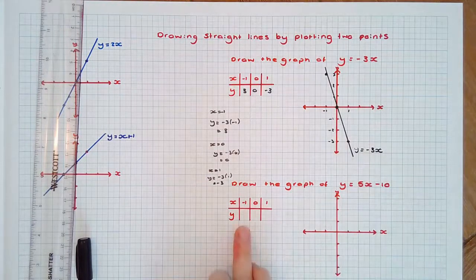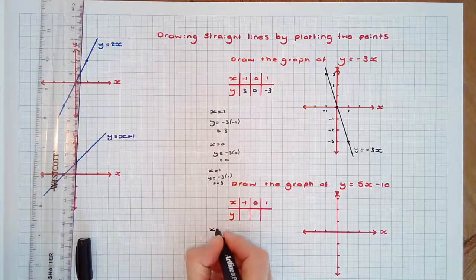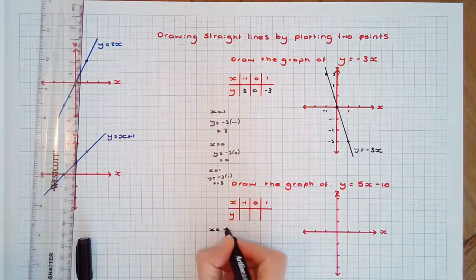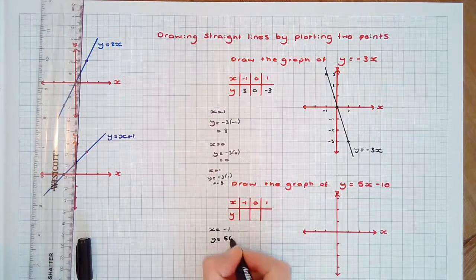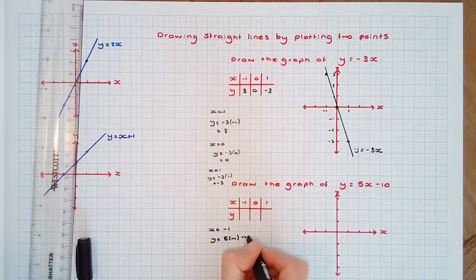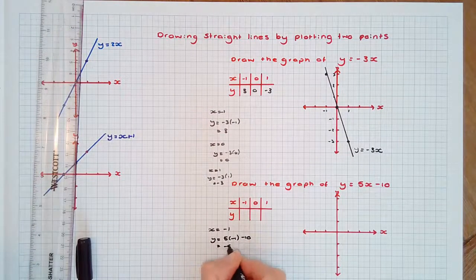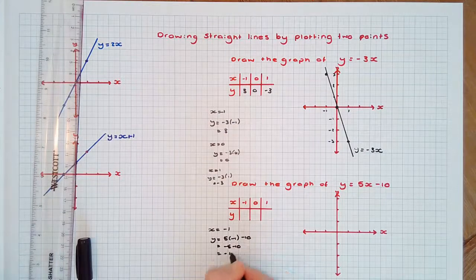When x equals negative 1, y equals 5 times negative 1 minus 10. That is negative 5 minus 10, which is negative 15.